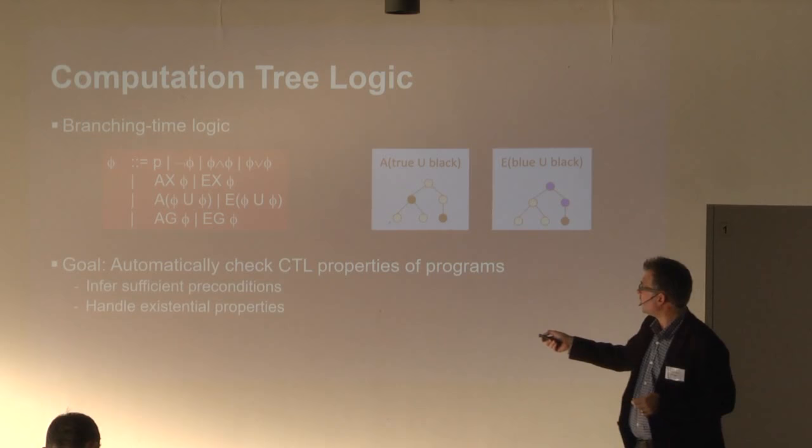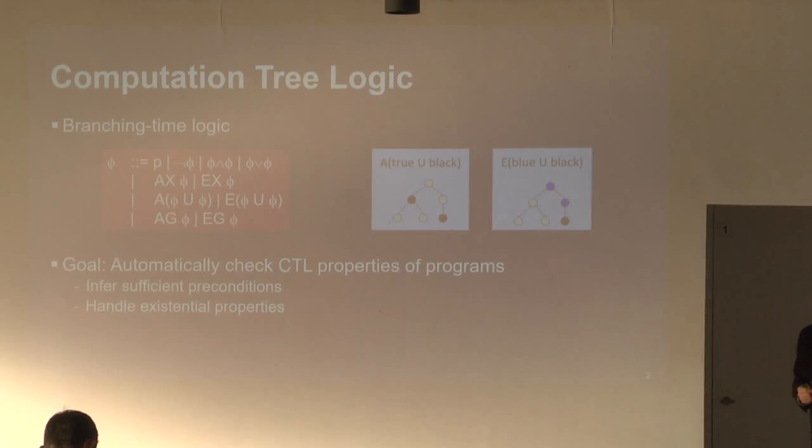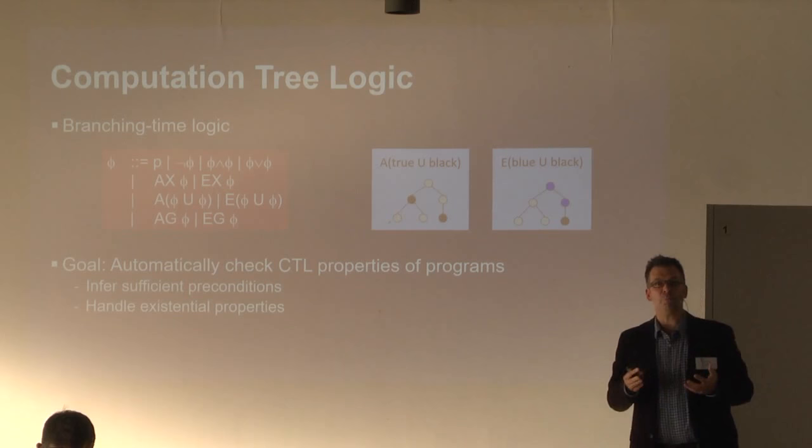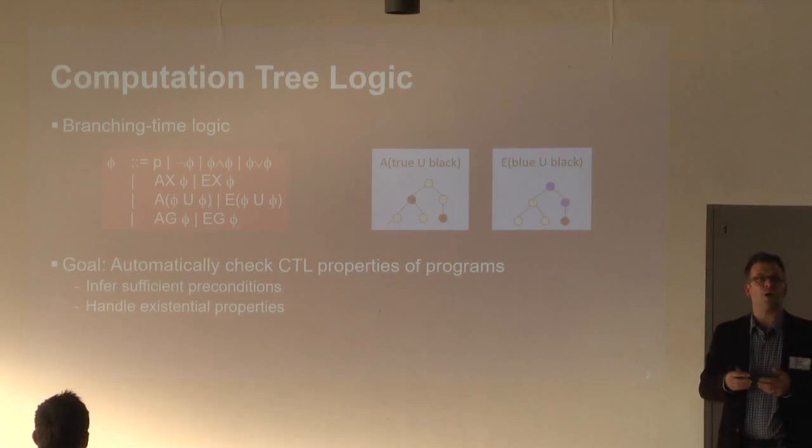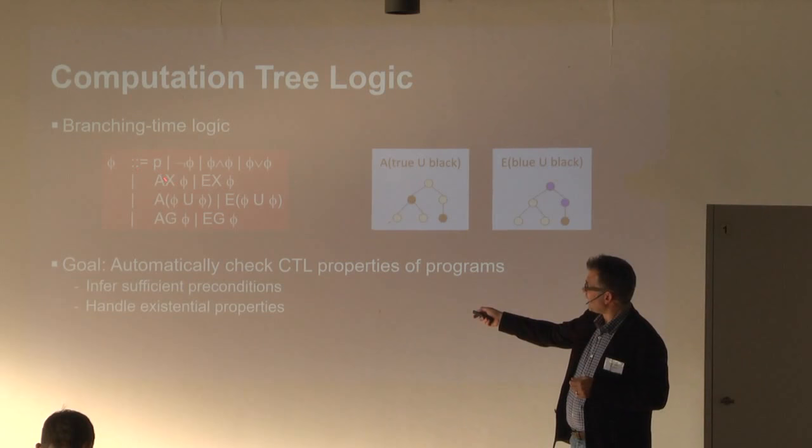The core formulas in CTL are atomic propositions, negation, conjunction, and disjunction. For the temporal operators, they all come in two forms: a universally quantified form that talks about all possible futures, and an existentially quantified form that talks about the existence of at least one possible future satisfying the formula.